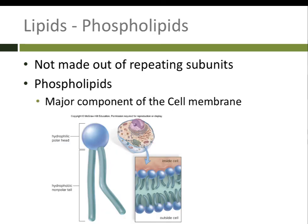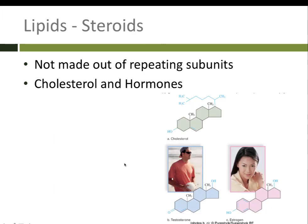Phospholipids are also not made out of repeating subunits. They only have two tails — a head group and two fatty acid tails. Steroids look very different — they have a ring structure with four rings. We use steroids to make cholesterol and hormones, including sex hormones like testosterone and estrogen.